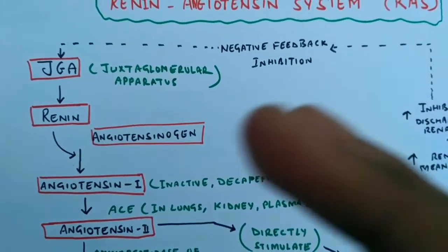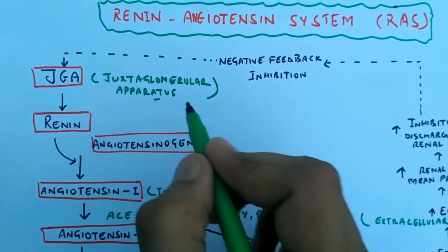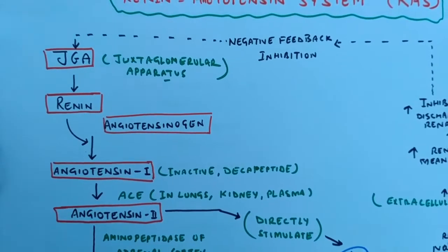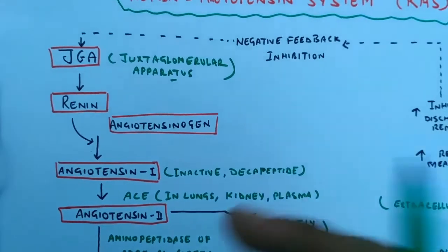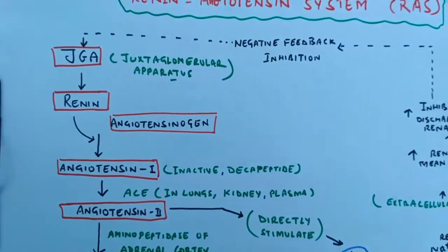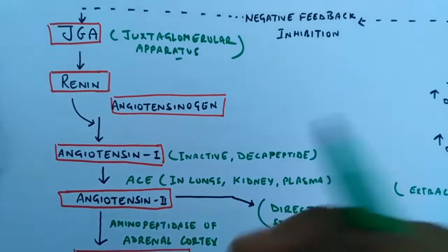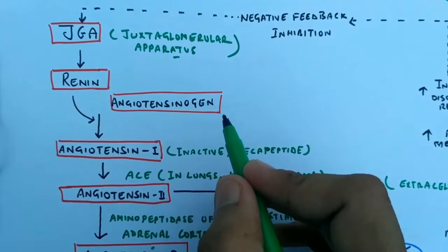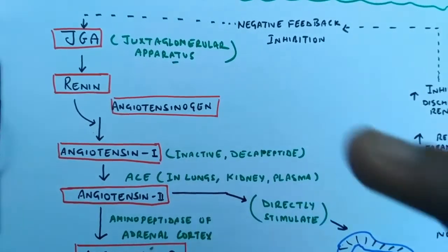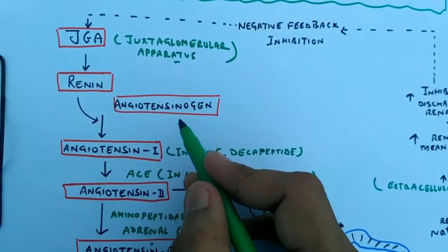Firstly, there is a juxtaglomerular apparatus found in the kidney. It releases renin. Renin also comes from the liver. Renin is an enzyme and can be related to a hormone-activating system. It activates angiotensinogen, which is an inactive protein form and can be regarded as a hormone.